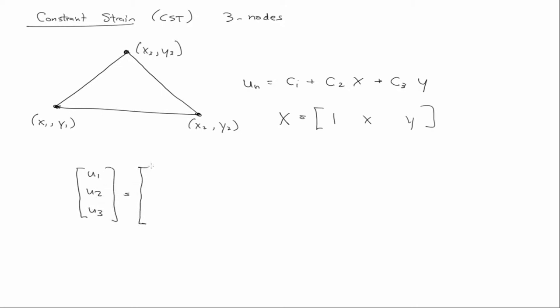We evaluate it at three points. So we have [1, x1, y1], [1, x2, y2], [1, x3, y3]. C1, c2, c3. So this is our so-called A matrix.